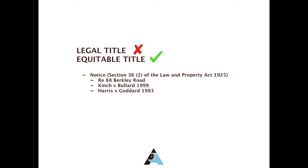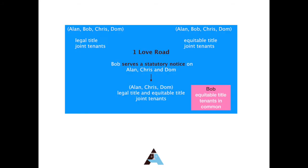Let's see how this works in practice. Alan, Bob, Chris and Dom hold both the legal and equitable interest in One Love Road. Bob serves a statutory notice on Alan, Chris and Dom. This means that Bob will now hold his equitable interest as a tenant in common, and his interest will pass under his will or on intestacy.